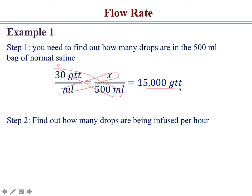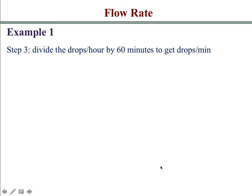For the next step, you want to find out how many drops are being infused per hour. So you take the total drops of 15,000 and you divide that by two hours because it's being infused over two hours, and you come up with 7,500. So every hour 7,500 drops are being infused. Now that you know the drops per hour, you just divide by 60 minutes to get the drops per minute, and that will give you the answer of 125 drops per minute.